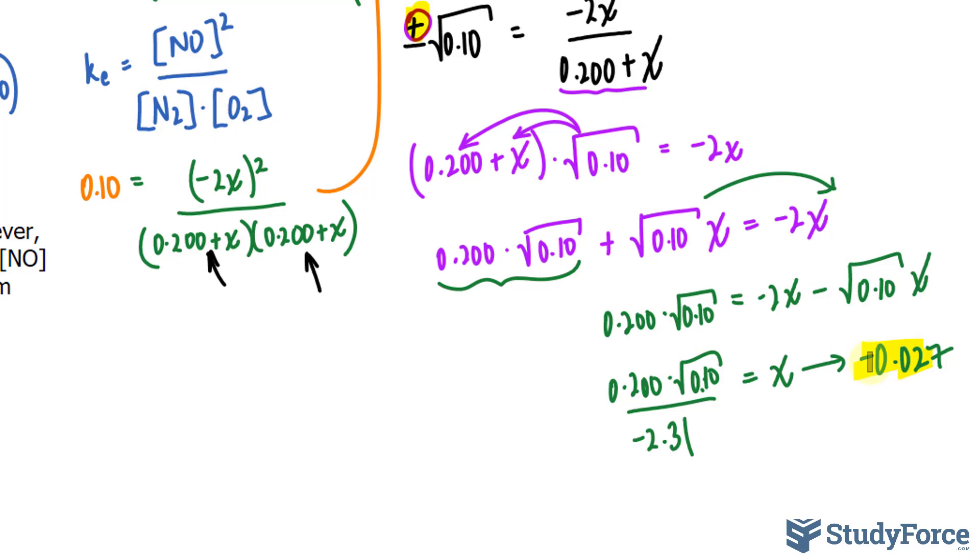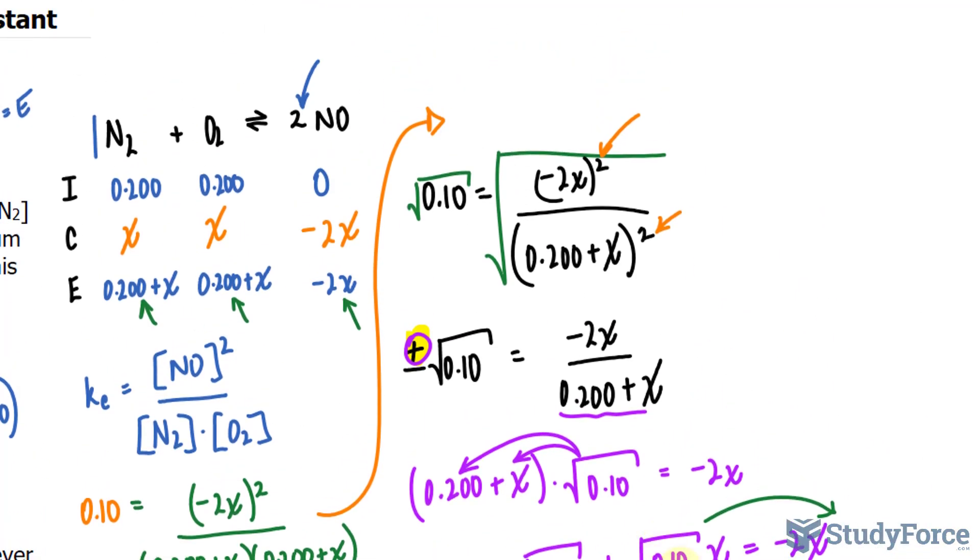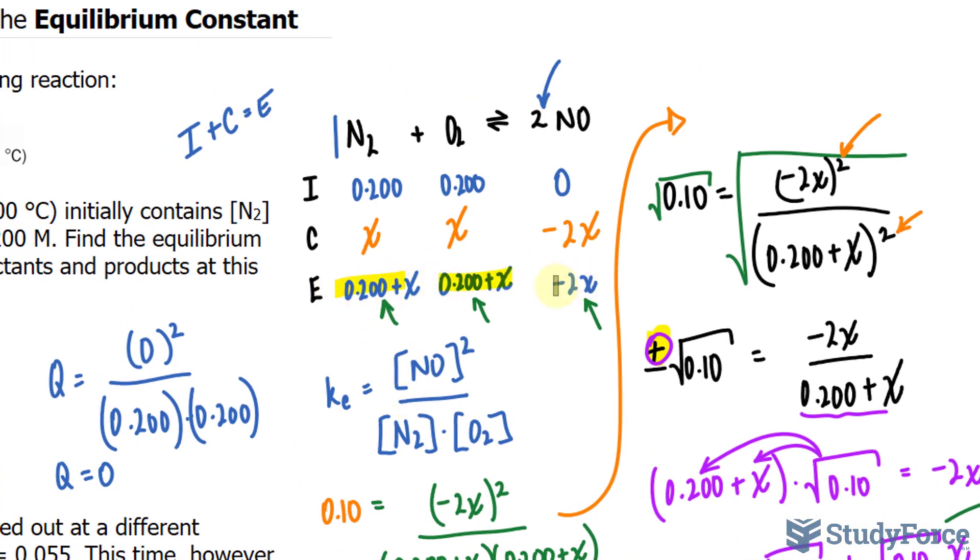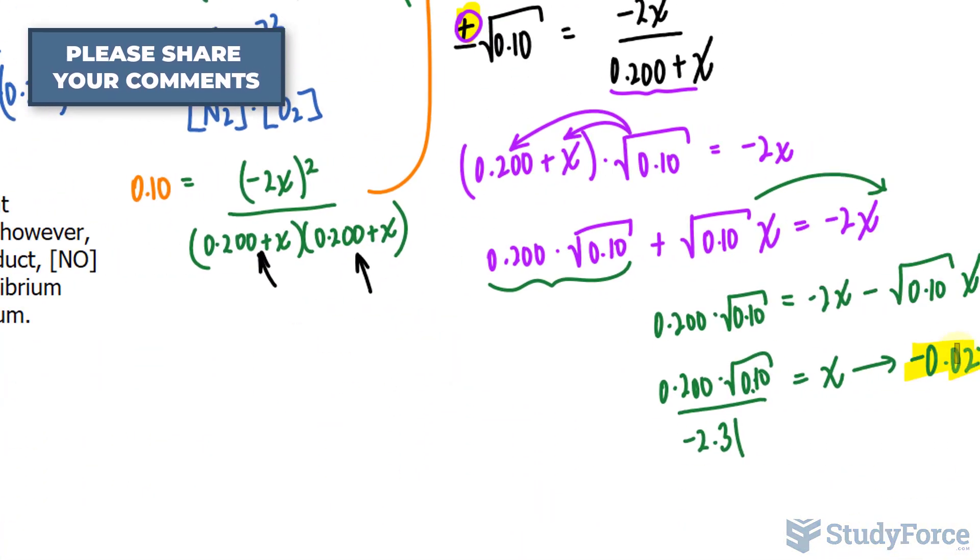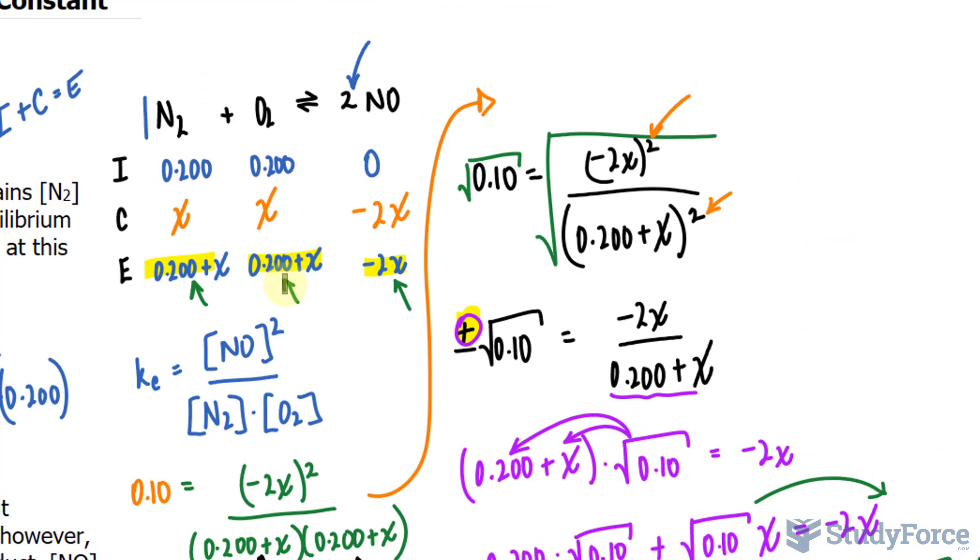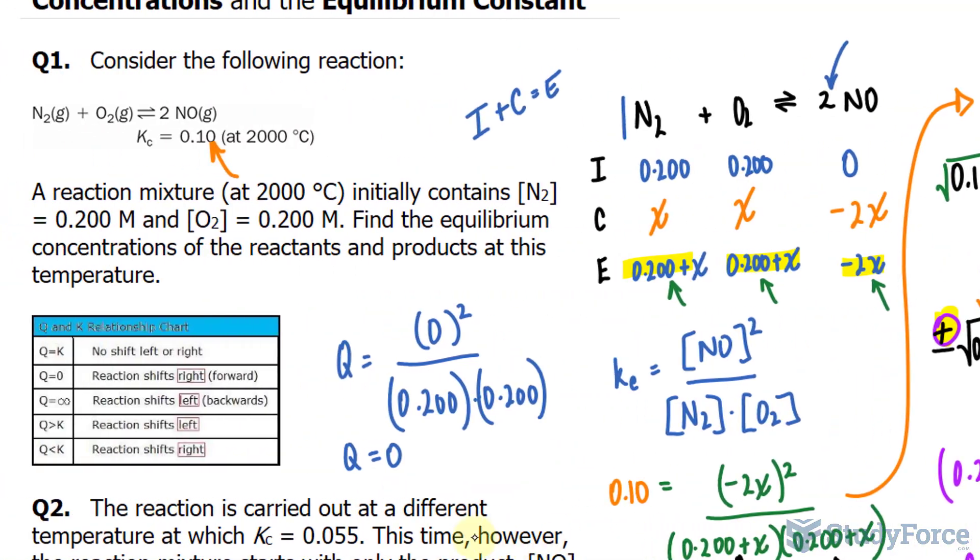I'm going to tell you right now that this is the correct version. So by choosing the positive version, we happen to be right. Because our next step would be to replace X in our ICE table with the number that we found. And if our number happened to be positive and we placed it into here, then we would end up with an equilibrium that is negative, and that doesn't work. However, by placing a negative number like the one that we found into any of these expressions, we end up with a positive value. This is why the positive version of 0.10 is the right choice.